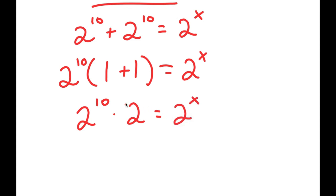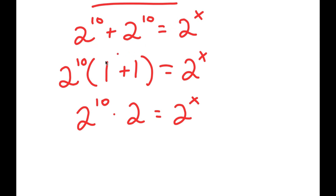A simpler way of doing this: instead of factoring it out, we have two 2 to the power of 10s here. Anything added by itself is the same thing as that number times 2. So we could have just said 2 to the power of 10 times 2 at the beginning instead of factoring it out.